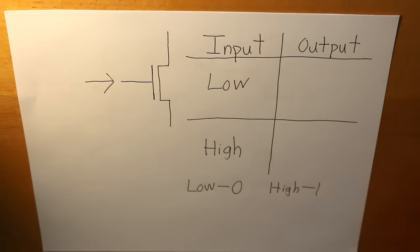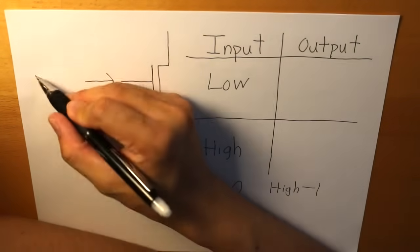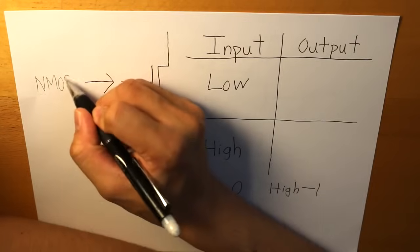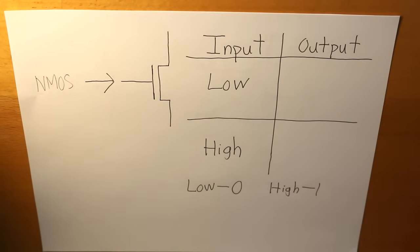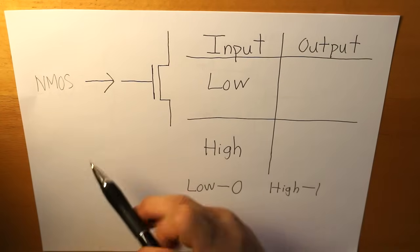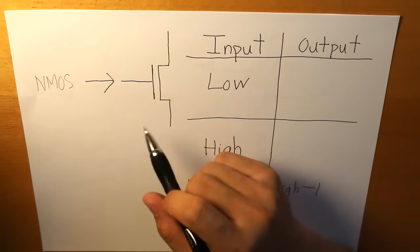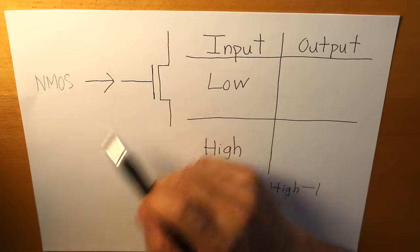The other half is called an NMOS. And the NMOS is basically just the opposite of what a PMOS is. The NMOS is electron concentrated so it doesn't have that hole.